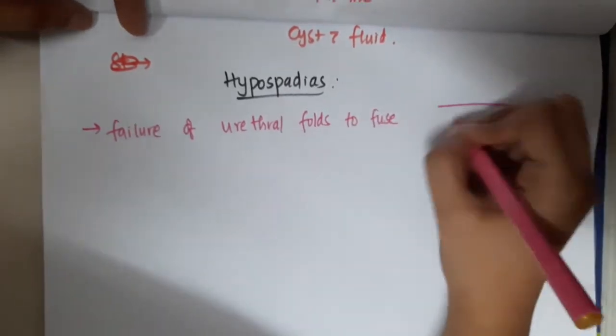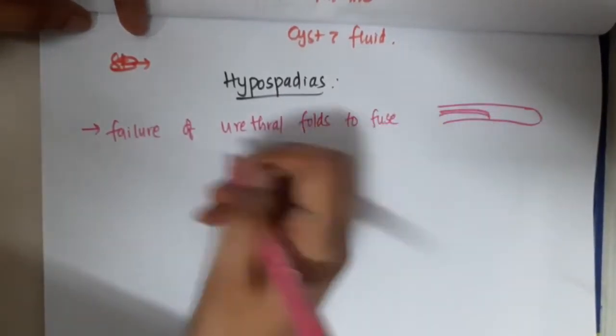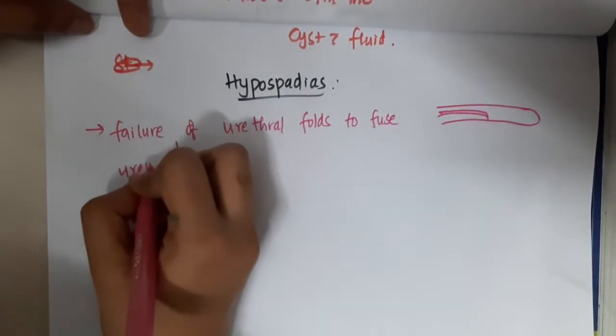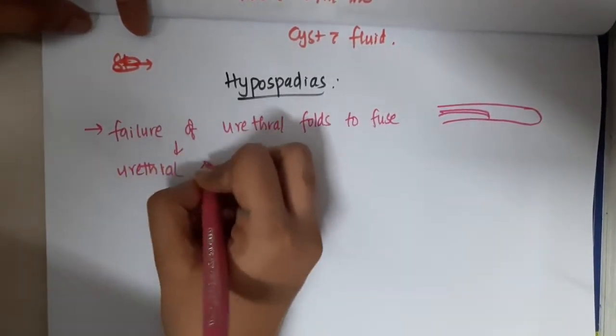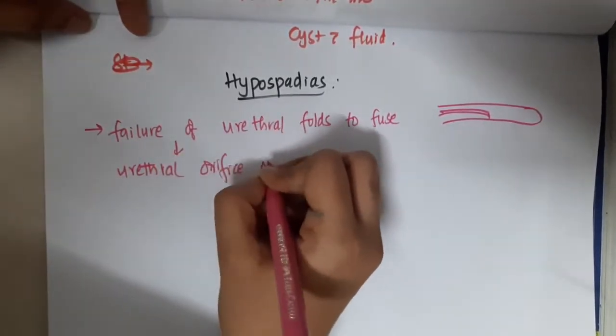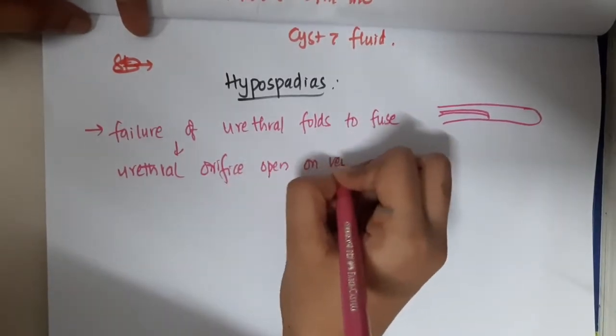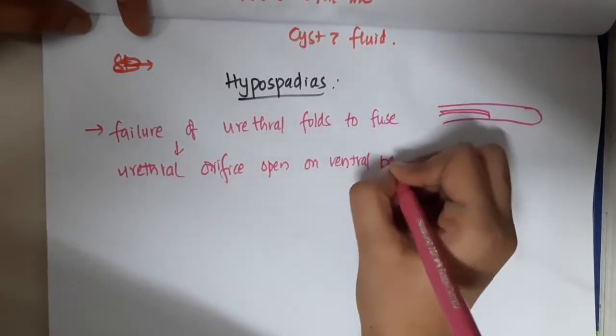As a result, if this is the penis, the urethral orifice will open on the ventral side, the ventral penile surface.